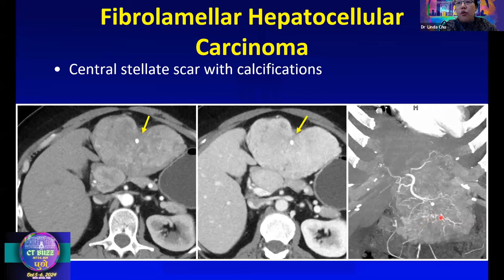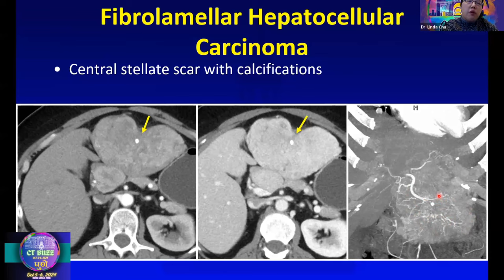When thinking about a lesion with a central scar, you may consider FNH, which also has a central scar. The key differential between fibrolamellar HCC and FNH is how heterogeneous the lesion is. If the feeding vessels look really irregular, you would be more worried about fibrolamellar HCC rather than FNH.